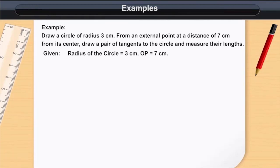Given: Radius of the circle is equal to 3 cm, OP is equal to 7 cm.